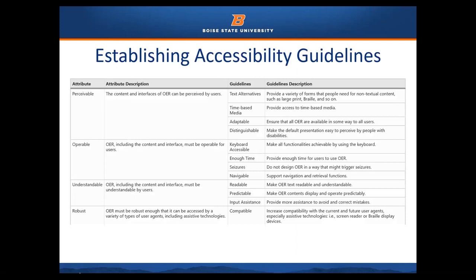There are four attributes to consider. You can see this on the screen, but I'll provide a basic overview. I will clarify that you can find this table in the journal article, 'Accessibility Within Open Educational Resources and Practices for Disabled Learners: A Systematic Literature Review' by Xiangling Chang and company. I will include the information in the description of the video. First is whether material is perceivable by all users. This can entail providing alternative forms to text or making sure students can process and distinguish the intricacies of the items.